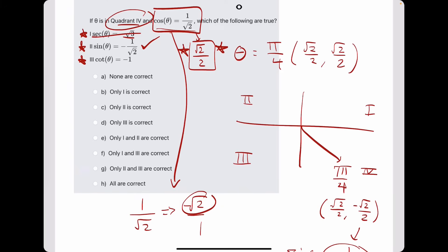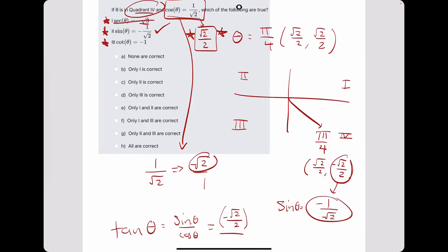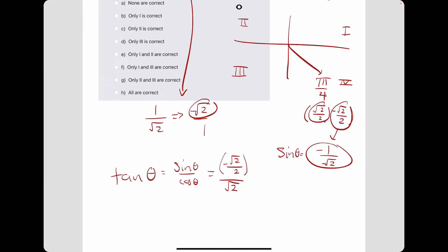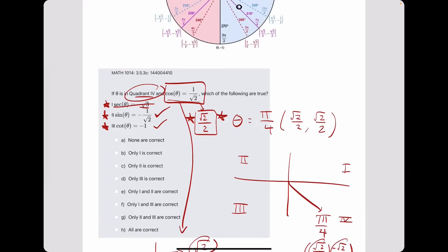Now number 3: cotangent equals negative 1. Cotangent is the flip of tangent, and tangent equals sine over cosine. Sine of theta is negative root 2 over 2 and cosine of theta is positive root 2 over 2. We're dividing something by itself, so tangent equals negative 1. Cotangent is 1 over tangent, so 1 divided by negative 1 is negative 1. That's exactly what they say, so numbers 2 and 3 are our answers — option G.